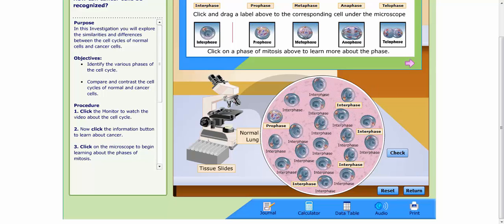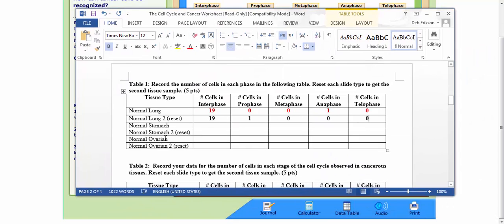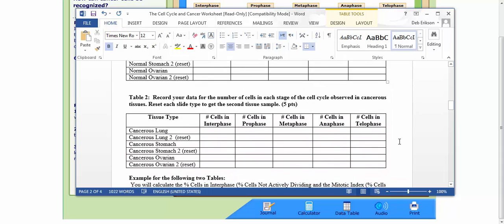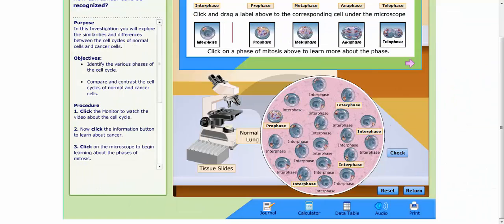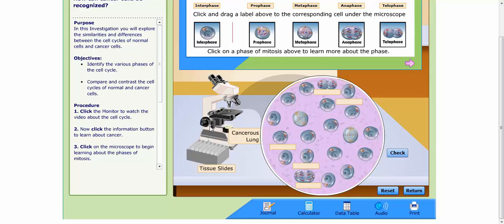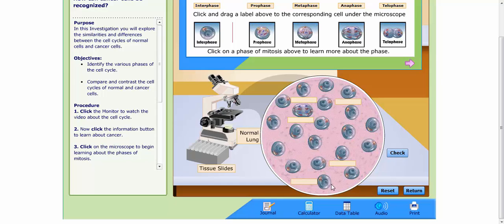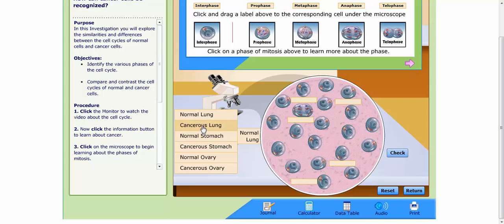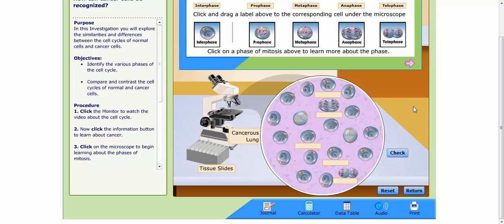Now you'll see that you're supposed to do a reset on all of these, the normal and the cancerous ones. So if I reset, it comes back to normal lung. Well, unfortunately, let's say I was working on cancerous lung, and I did my first one, and then I reset it. It defaults back to normal lung.